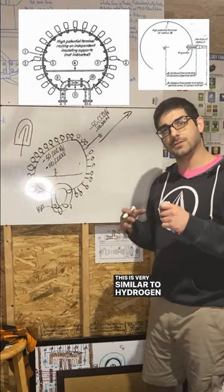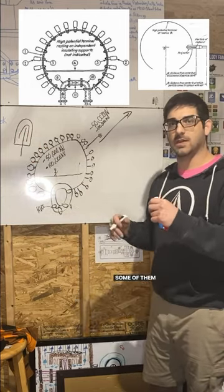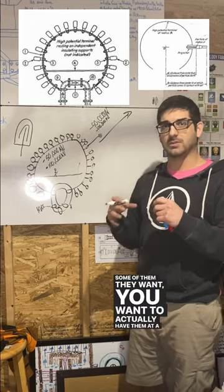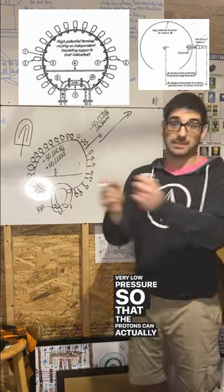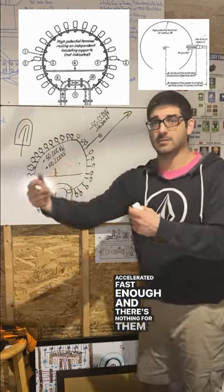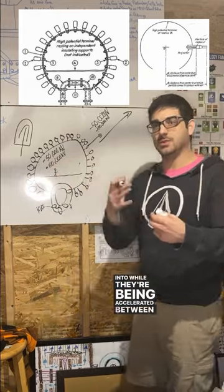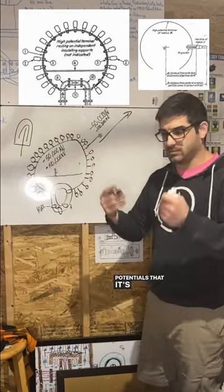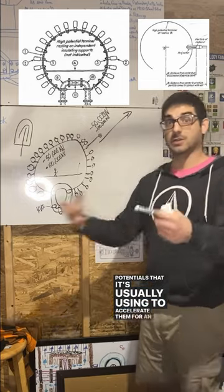This is very similar to hydrogen fusers. Not all of them, but some of them, you want to actually have them at a very low pressure, so that the protons can actually be accelerated fast enough, and there's nothing for them to smash into while they're being accelerated between the two potentials that it's usually using to accelerate them, for an electrostatic version.